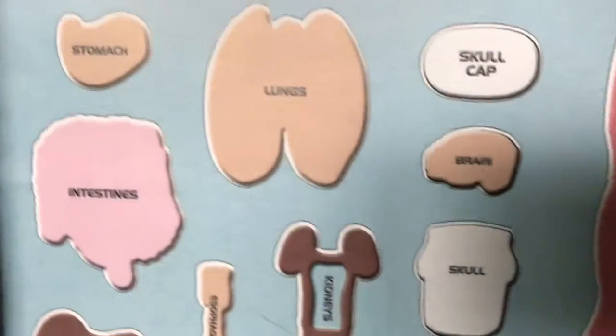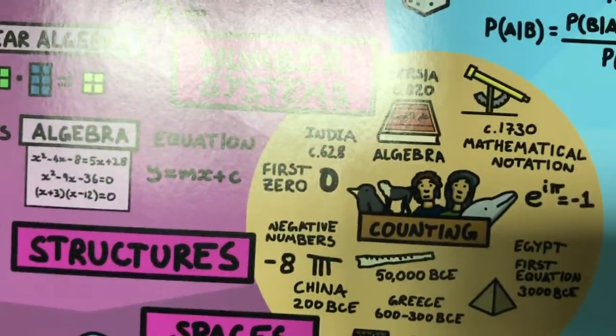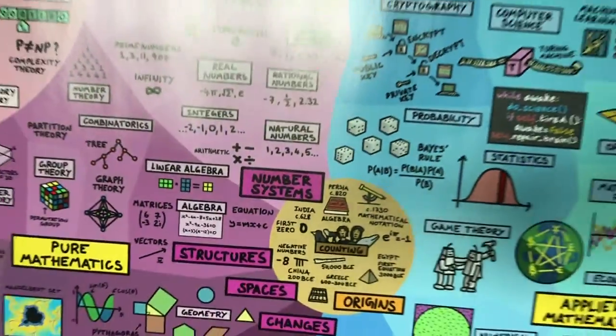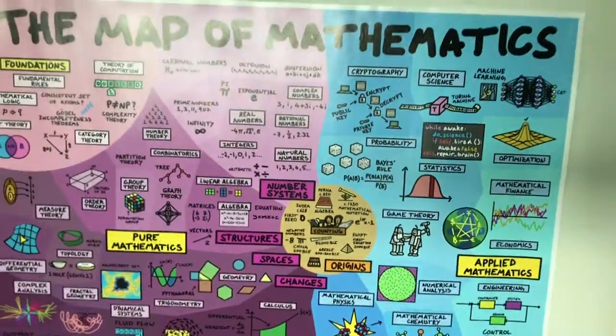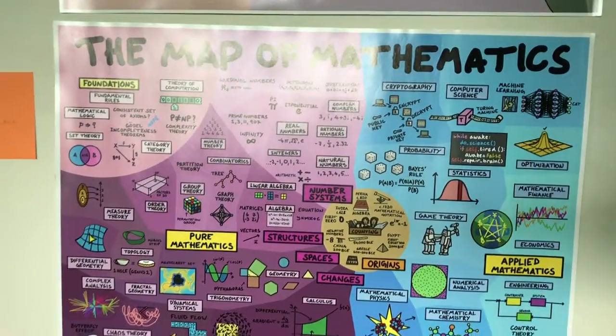Then you go up. First of all, you have the brain. And the brain thinks in numbers. You start counting one, two, three, four, five. And then you make all these mathematical numerical systems. Map of mathematics.